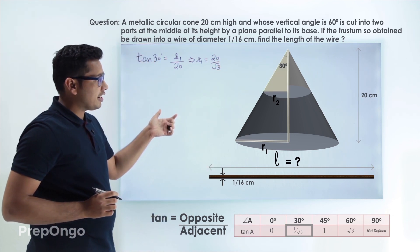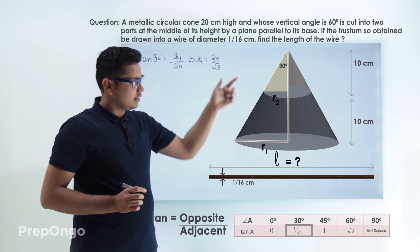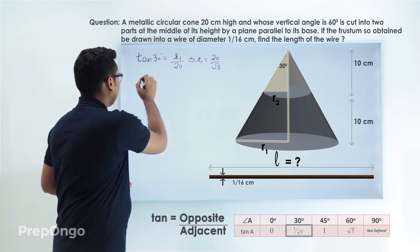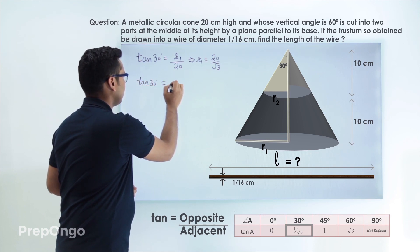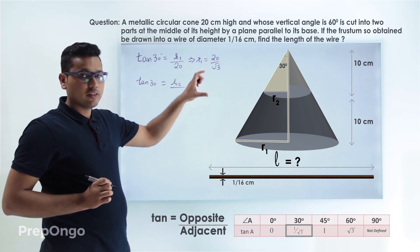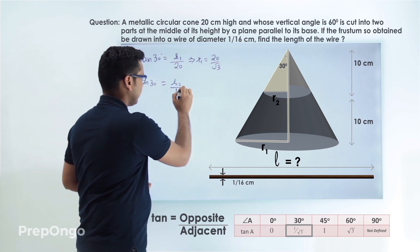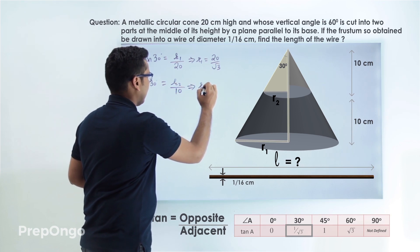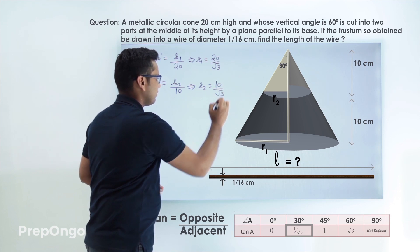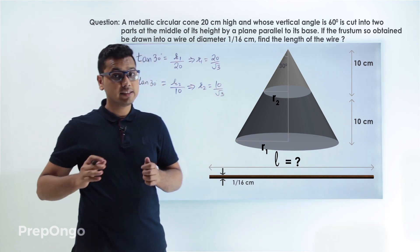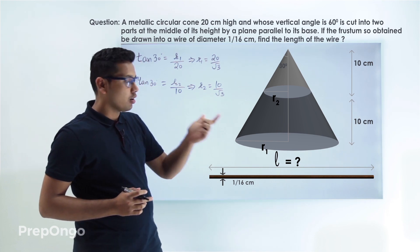In the similar way we can find out the value of R2 as well by applying TOA again in this triangle. So tan 30 is equals to R2 and this time height of this triangle is 10. So this will be 10. Now the value of R2 will come out to be 10 upon root 3. And now we can easily calculate the volume of this frustum and equate it with the volume of the wire.